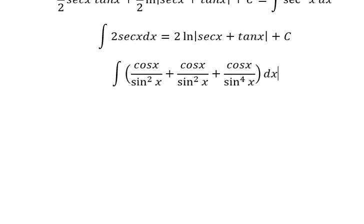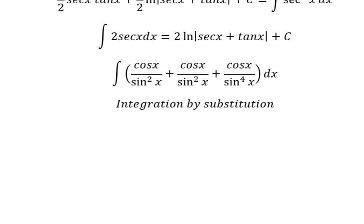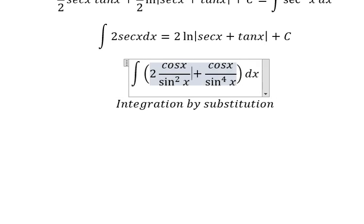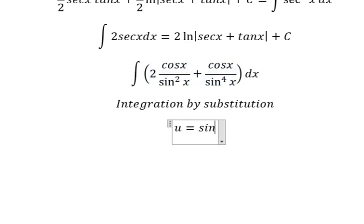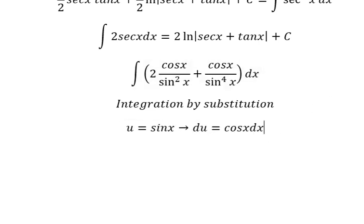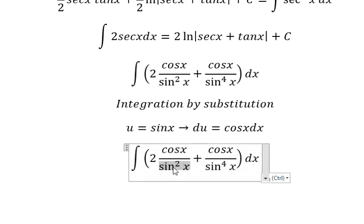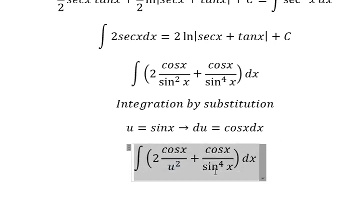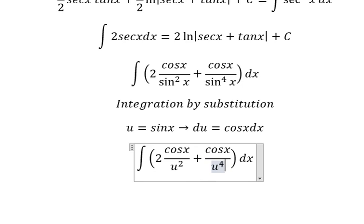Now let's go to the next one. So I need to use integration by substitution. This one is about number two in here. So I will put u equal to sine x, then du equals cosine x dx. So this one we change by u and we have u squared in here. Similarly for this one, cosine x with dx we change by du.